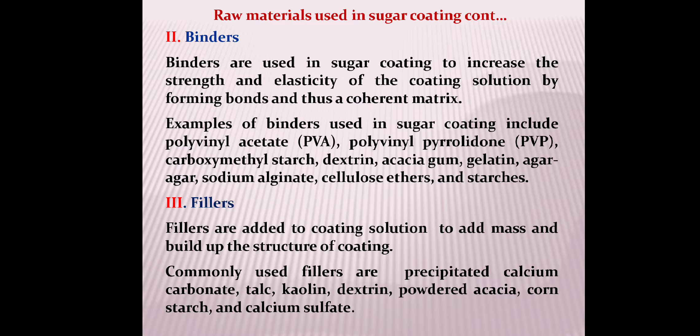Binders are used in sugar coating to incorporate strength and elasticity into the coating solution by forming bonds and thus a coherent matrix. Examples of binders include polyvinyl acetate, polyvinylpyrrolidone, carboxymethyl starch, dextrin, gum acacia, gelatin, agar-agar, sodium alginate, cellulose ethers, and other starches.